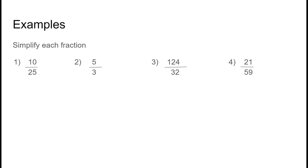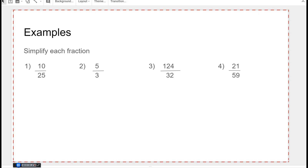Let's take a look at simplifying fractions. There are lots of different ways to do this — prime factorization, factor tree, birthday cake method — but we're just going to look at common factors here. If we're looking at the fraction 10 over 25, I start thinking of numbers that can divide both. It's best to start with the biggest. I know 25 and 10 are both divisible by five, so I divide both top and bottom by five. Ten divided by five is two, 25 divided by five is five. There are no more common factors, so this is simplified.